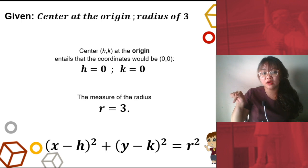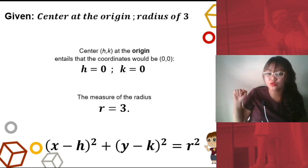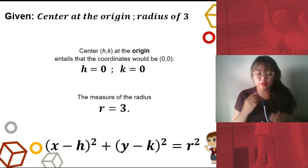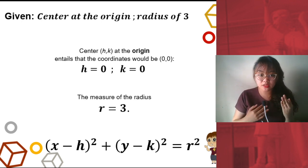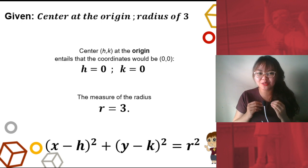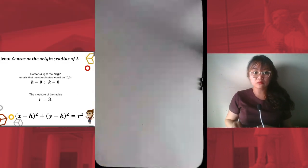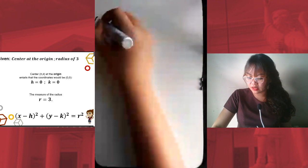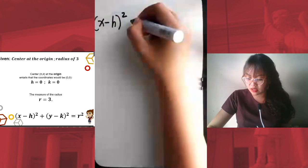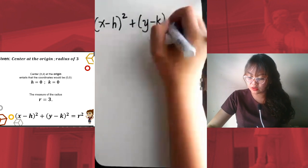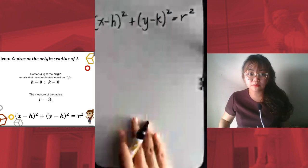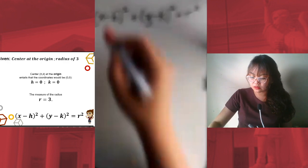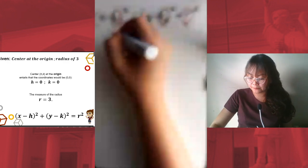The formula for the standard equation is: the quantity of x minus h squared, plus the quantity of y minus k squared, equals r squared. We already have a value for h, for k, and for r. What do we do next? Substitute! So we will be substituting these values into the formula.